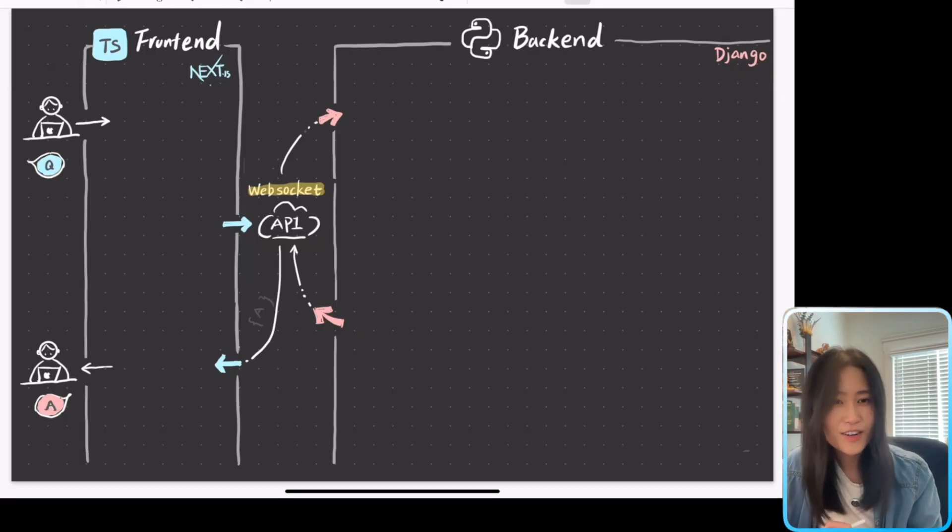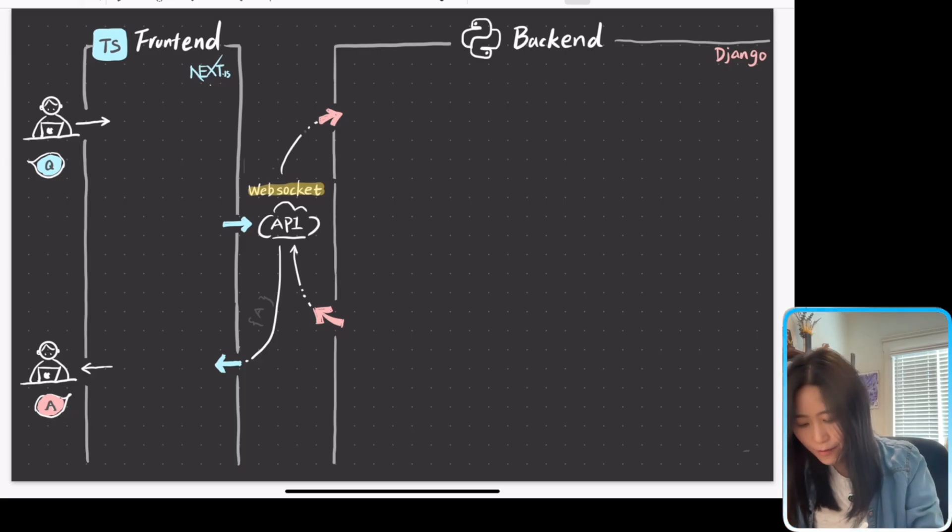Here's what our current architecture looks like. We have a frontend and a backend. Frontend is built using Next.js framework and it's written in TypeScript. Backend is built using Django framework, written in Python. Frontend and backend are communicating using WebSocket API.